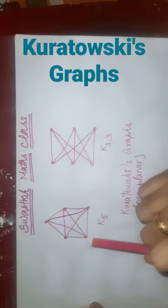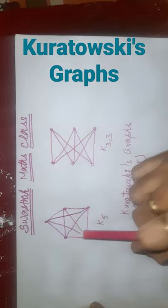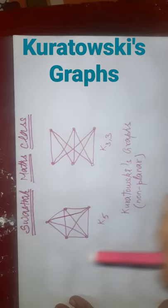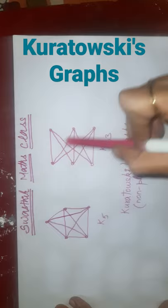What is special in these two graphs? Both are non-planar graphs and both are regular graphs. Kuratowski's first graph is a 4-regular graph and Kuratowski's second graph is a 3-regular graph.